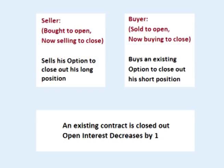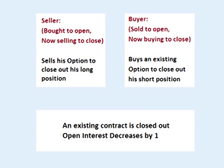Open Interest decreases when a contract is closed out. If the buyer sells the option he is holding to a writer buying back his short position, it closes out an option contract. Therefore, Open Interest for that strike price decreases by one.